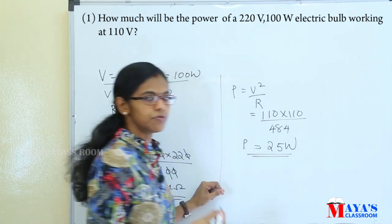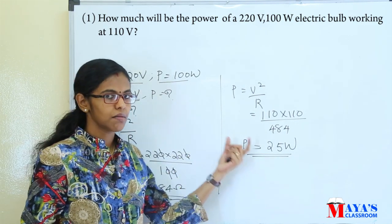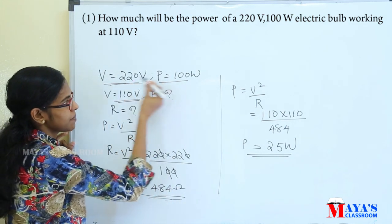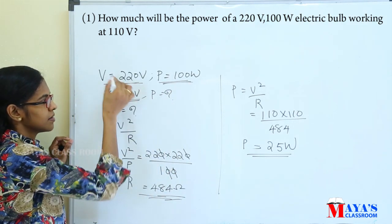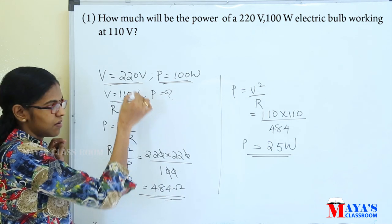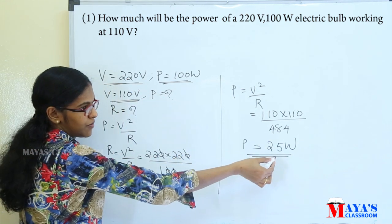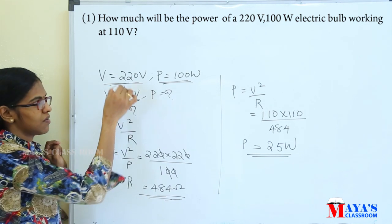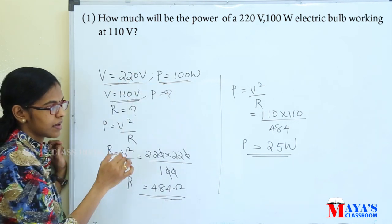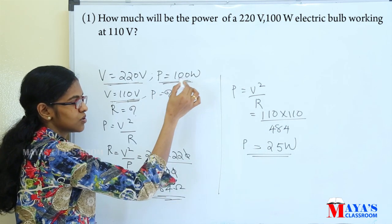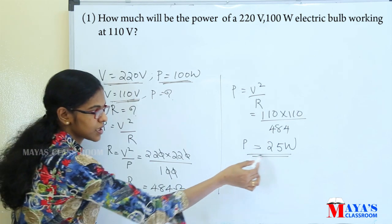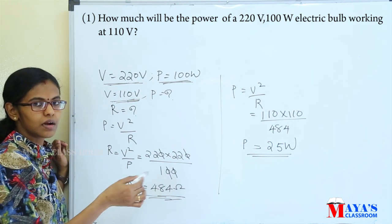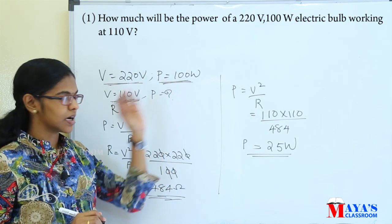Power is equal to 25 watt. That means if the bulb is working at 110 volt, the bulb gives 25 watt. That means the power becomes one-fourth. If the voltage is half, the power becomes one-fourth — so from 100 watt it becomes 25 watt. The power is more than 4 times reduced.